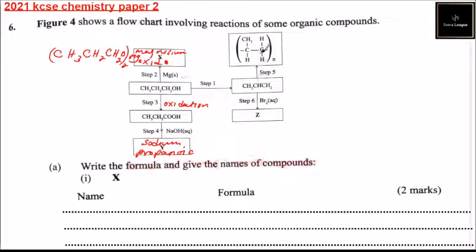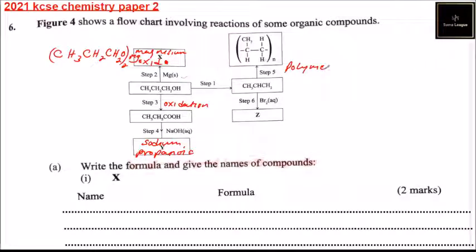In Step 5, from propene we get a polymer. So propene to a polymer — that process we call polymerization.